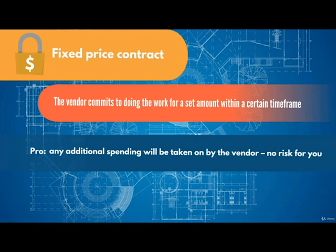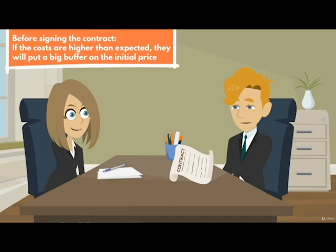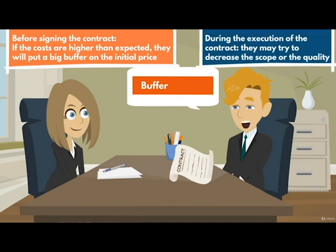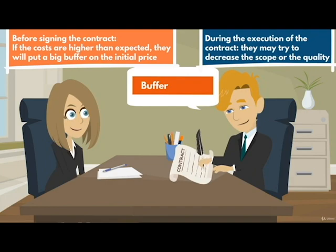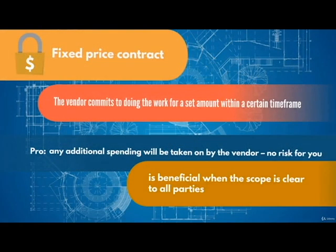Or is it? The vendor is aware that with this kind of contract, if the costs are higher than expected, then they will incur losses. Therefore, there is a chance they will put a big buffer on the initial price. Or if they find that costs are getting too high, they may try to decrease the scope or the quality in order to compensate. So know that this is beneficial to use when the scope is clear to all parties, but a good analysis is important prior to making agreements.